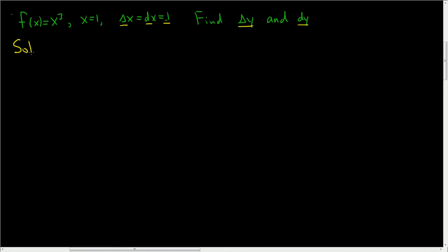So solution. This is a really easy problem. All we have to do is use two formulas. So delta y is equal to f of x plus delta x minus f of x. So that's the formula we'll use to find delta y. And then dy is equal to f prime of x dx.